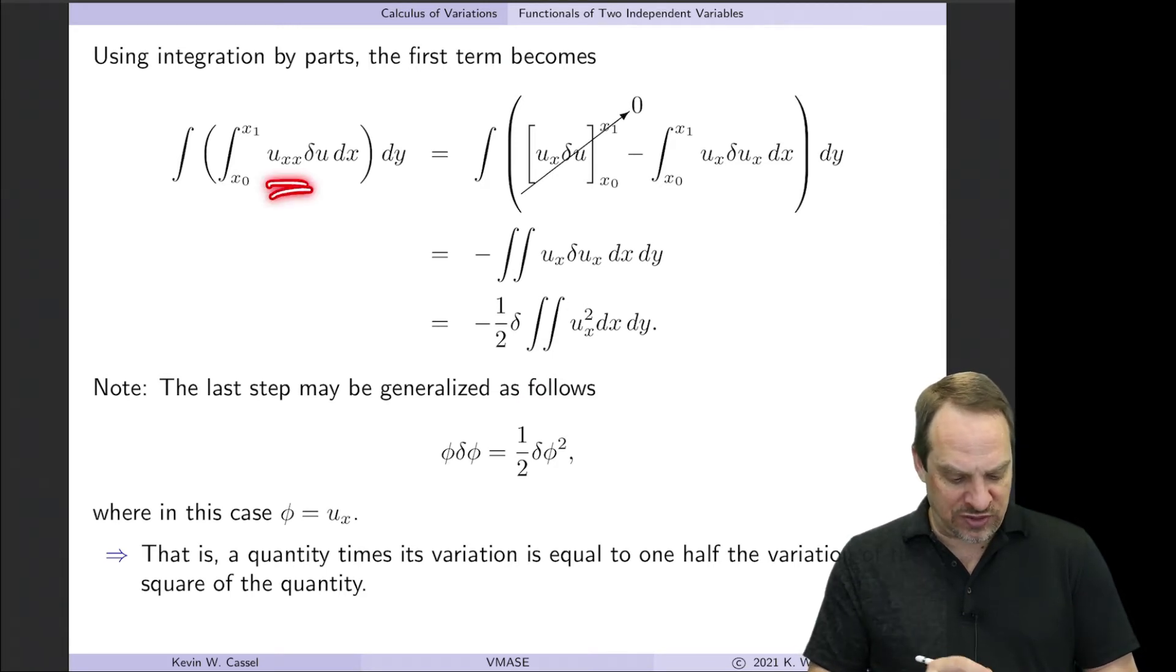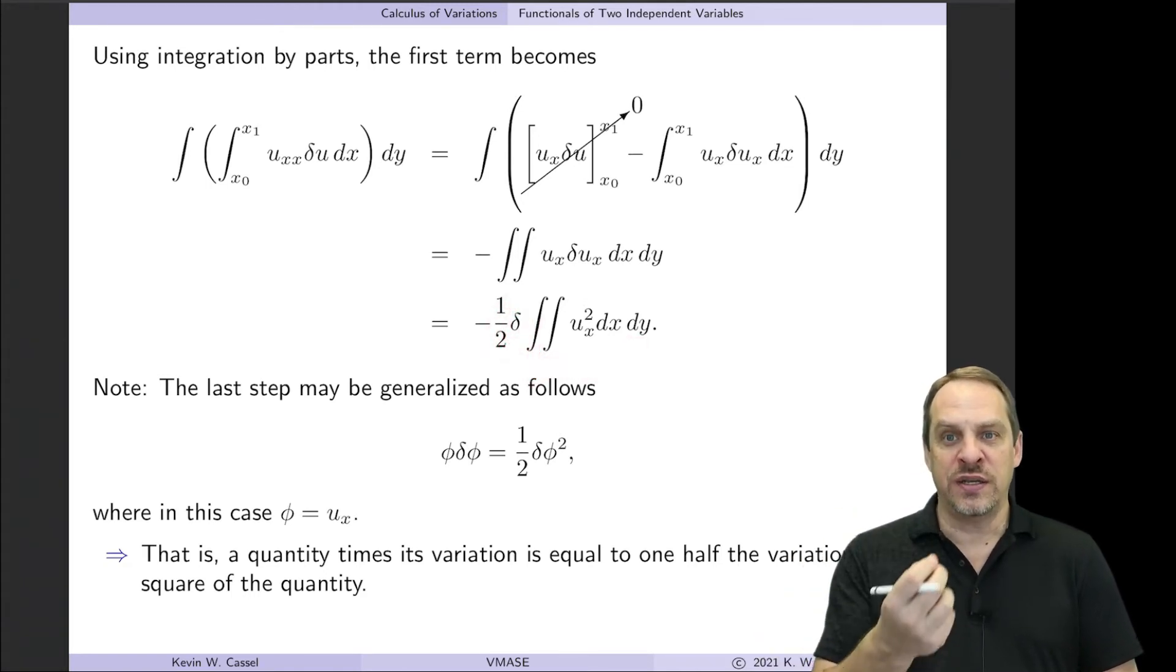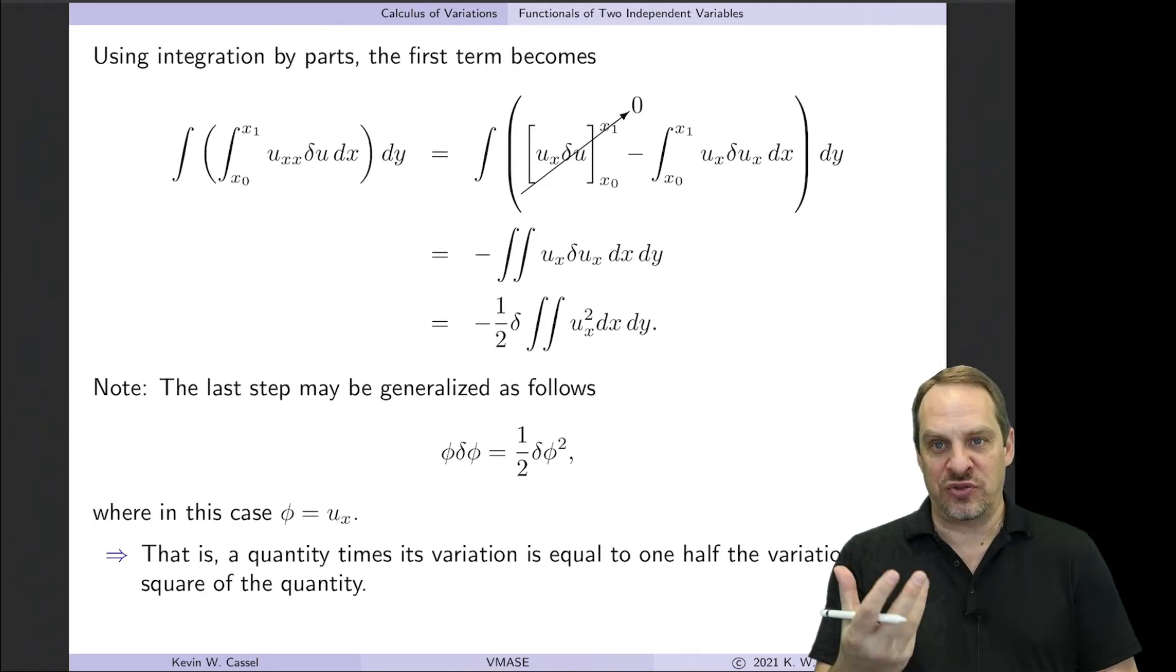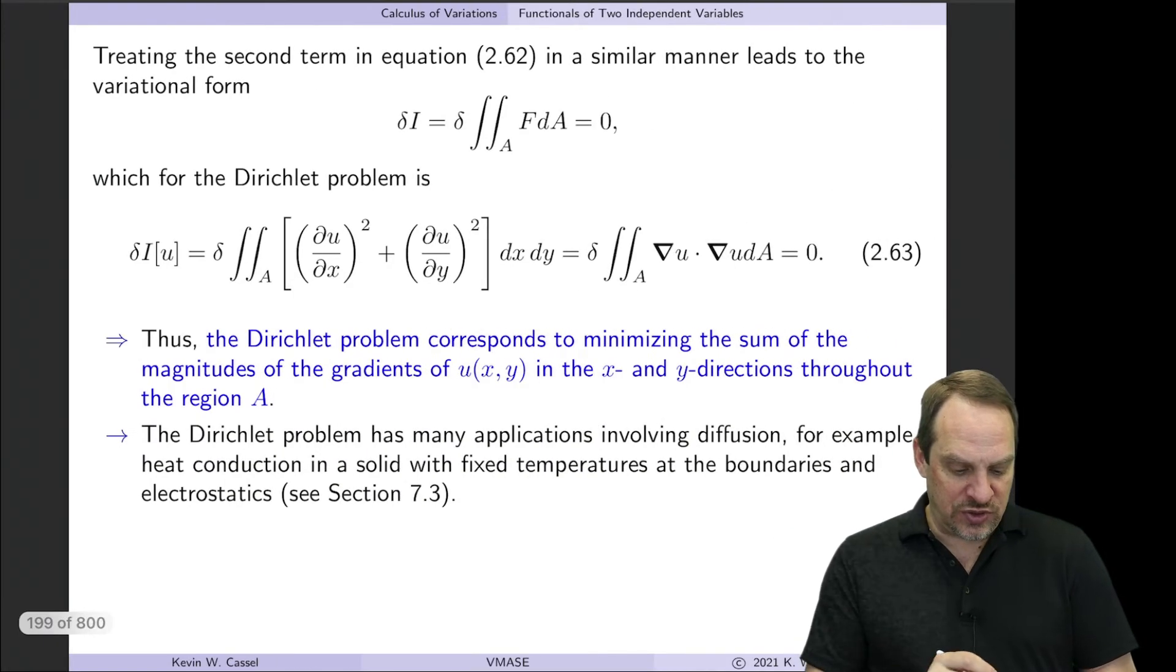Alright, so that's for the Uxx term. For the Uyy term, you do exactly the same thing. But then it's integration by parts in the y direction. And notice what we've done. We've gotten the variation out of the rest of the integrand. So that's the variation of I, set equal to 0. Now we can extract out the I. So you can see here, now delta I is 0.